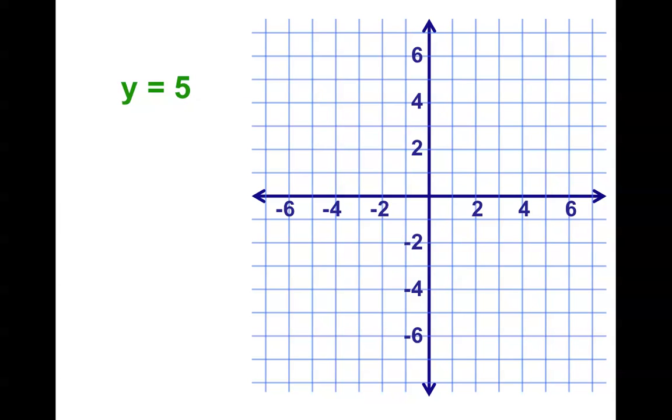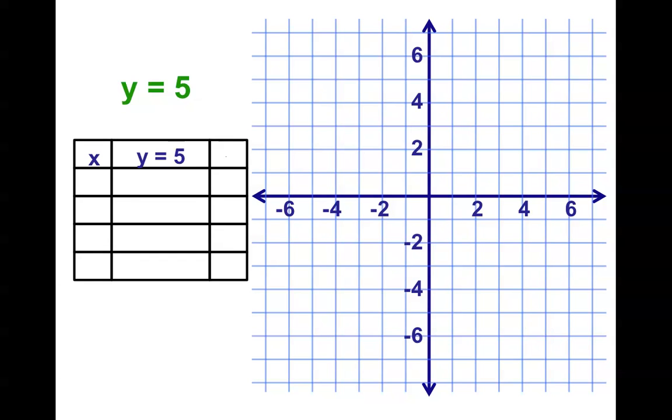Here's a special one: y equals 5. I always say pick the points that are easiest for you to pick. And this one is about as easy as it gets. Looks a little strange. But when I pick x to be 0, guess what? y equals 5. When I pick 1, guess what? y equals 5. I don't even have to do any math here. y equals 5. No matter what I pick, y equals 5. And check out what these points make.